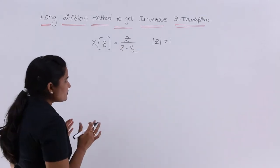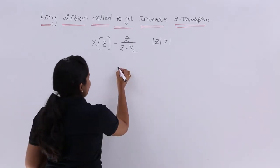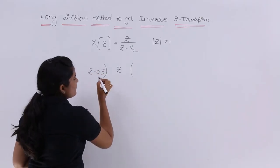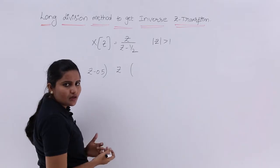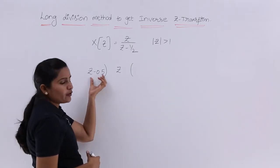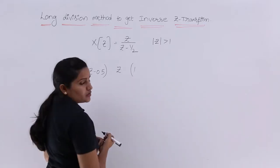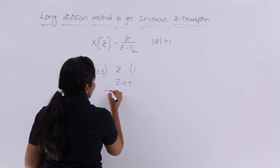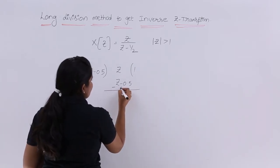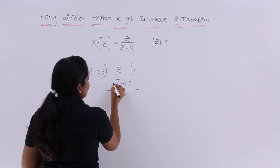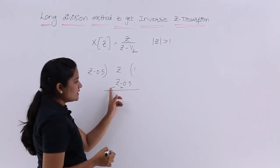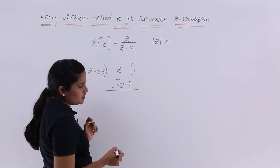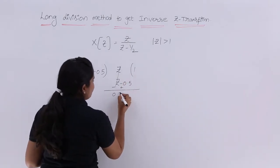Now let's see how to perform the division. We consider Z minus 1/2 — I'm writing 0.5 for convenience. Z goes in one time, giving Z minus 0.5. I'm going to change the signs: minus becomes plus. Z cancels and we get 0.5 here.